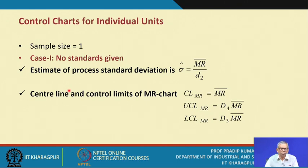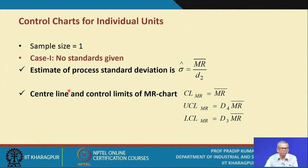Destructive testing is very common for measuring quality characteristics like tensile strength. In such cases, the sample size should be as minimum as possible, and the ideal size is 1. A second reason could be the production rate — if the production rate is very low, meaning in one shift you get just 1 unit, it depends on your manufacturing process time, and that may be why the sample size is 1.